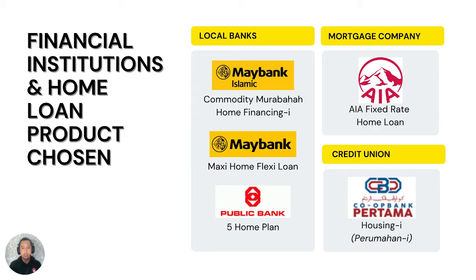Moving on to the next slide — types of financial institutions we chose. There are three types of financial institutions in Malaysia: the local bank, for example Maybank, Maybank Islamic, and Public Bank; second is mortgage company with the company called AIA Malaysia; and lastly is credit union, co-op bank, the company called Bank Pertama. The products we chose are: Maybank Islamic — Commodity Murabaha Home Financing; Maybank — Maxi Home Flexi loan; Public Bank — Flexi Home loan; AIA — Fixed Rate Home Loan; and Bank Pertama — Housing Line.